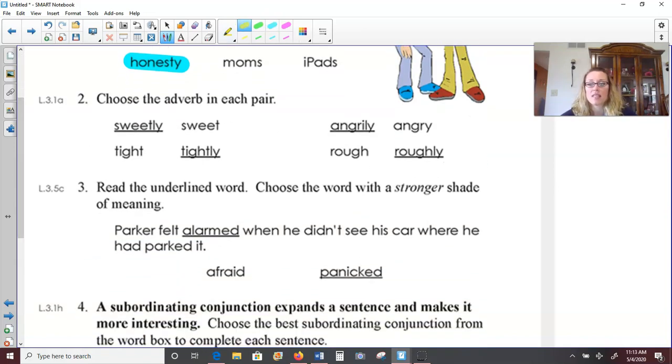Number two, choose the adverb in each pair. Remember, an adverb is like an adjective that's describing the verb, the action word. So sweetly and sweet. Well, a pair can be sweet or the person could be acting sweetly. So sweetly would be the adverb in the sentence. Sweet is an adjective. Tight and tightly. Tightly could be how you tied the knot. You tied it tightly. So that would describe how you tied it. That would be the adverb.